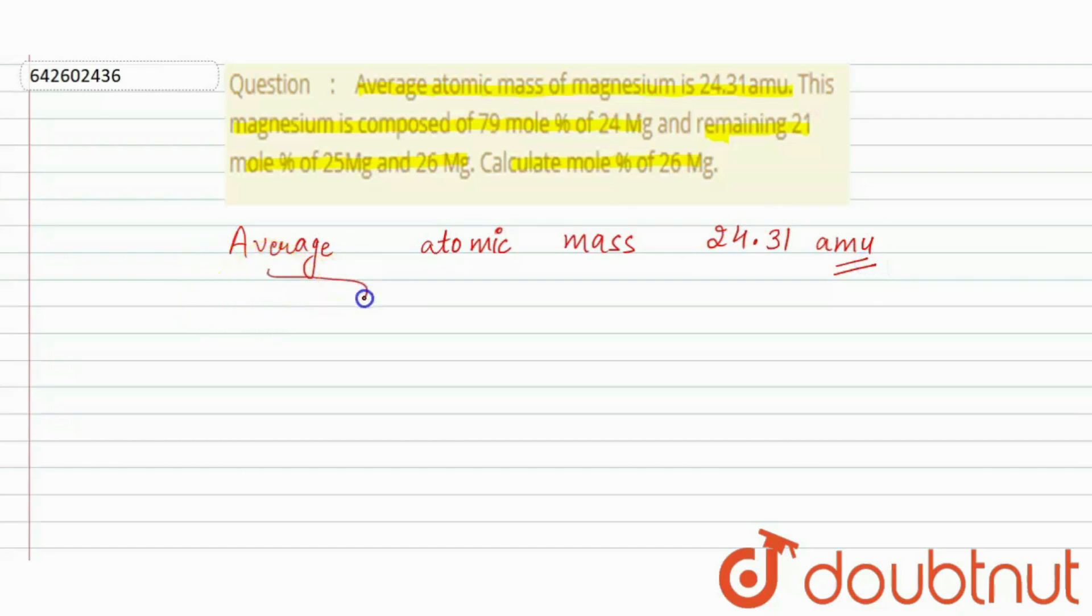So what is average atomic mass? It is the sum of product of masses of its isotopes.